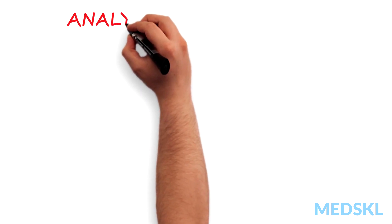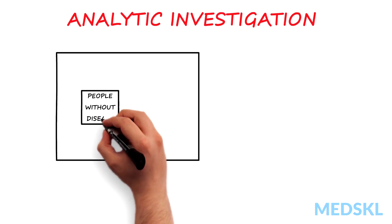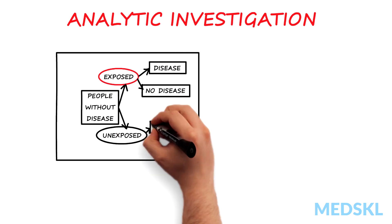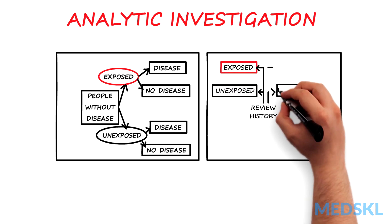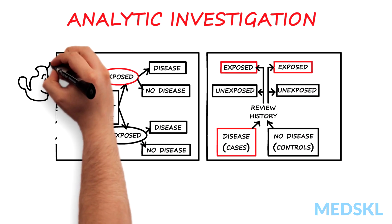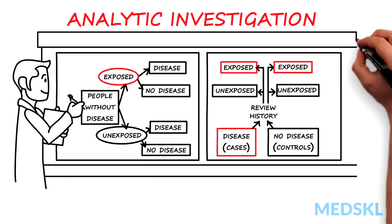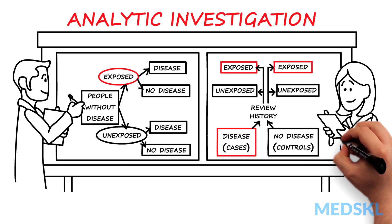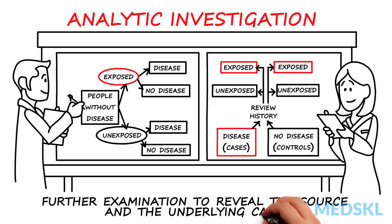We can investigate further using an analytical approach. Cohort or case-control study designs may pinpoint where the problem lies — for instance, the potato salad or the contaminated well. We can then use the criteria of causality to confirm our suspicions, such as laboratory testing of food and water samples to confirm contamination. Further inquiries are made to discover how the source became contaminated.